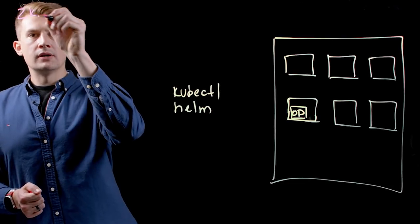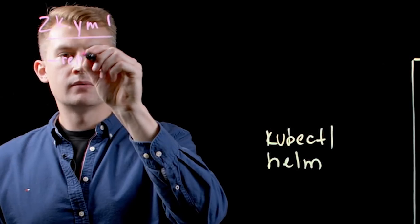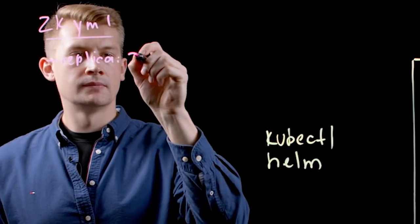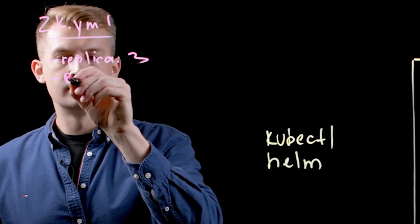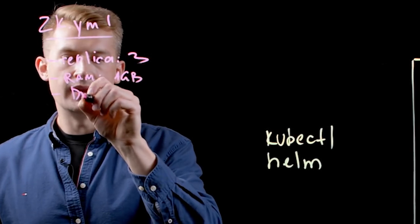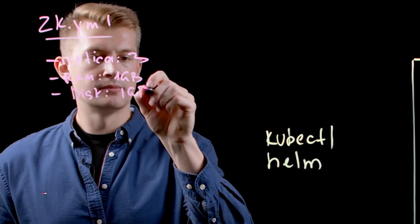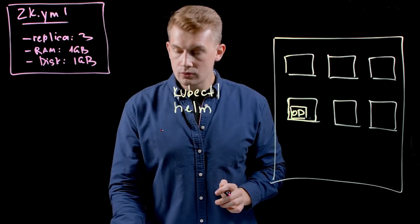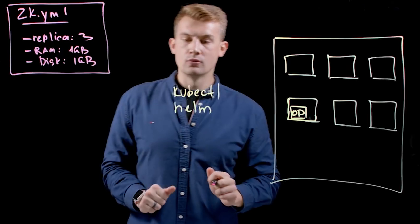So our zookeeper will look like this: replica 3 and RAM 1GB, disk 1GB. So your language, your communication aspects are now much more concise.